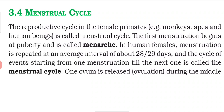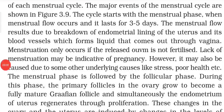The ovum is released during the middle of the Menstrual Cycle. The cycle starts with the Menstrual Phase — that means whenever the menstrual flow starts, the cycle begins — and it lasts for three to five days.